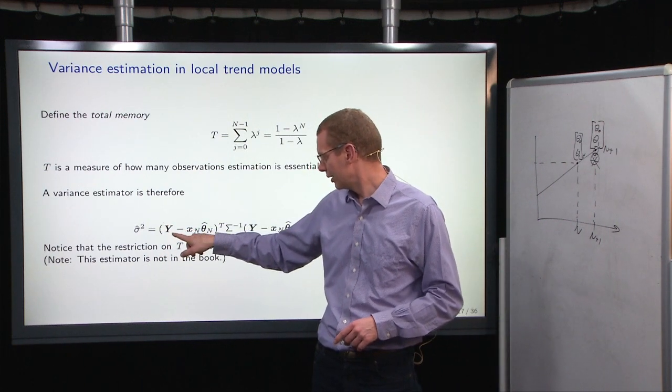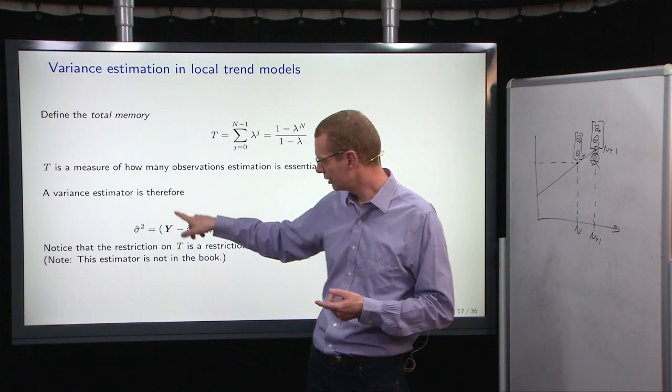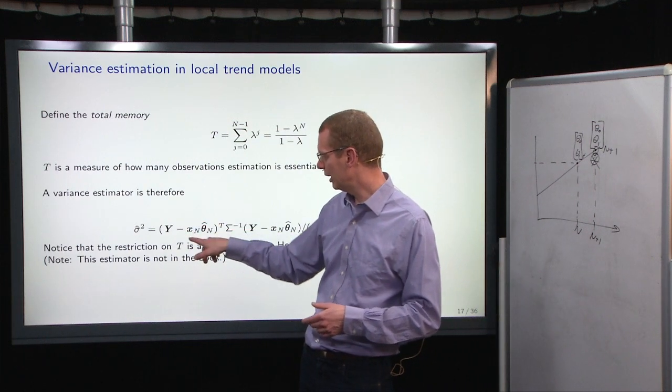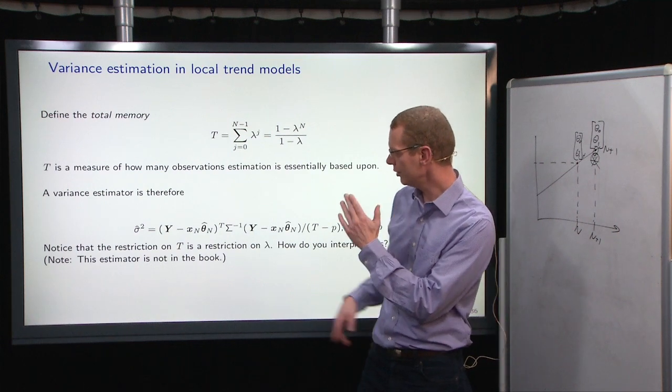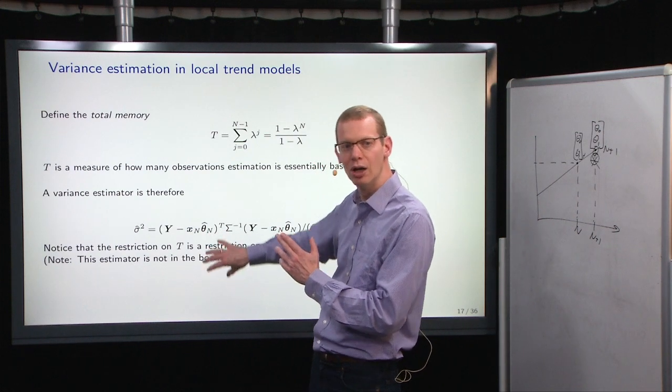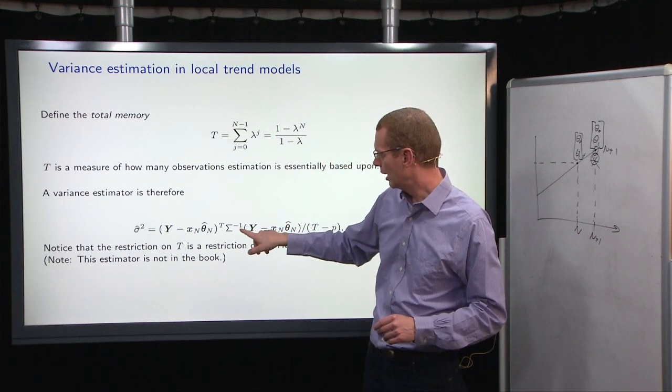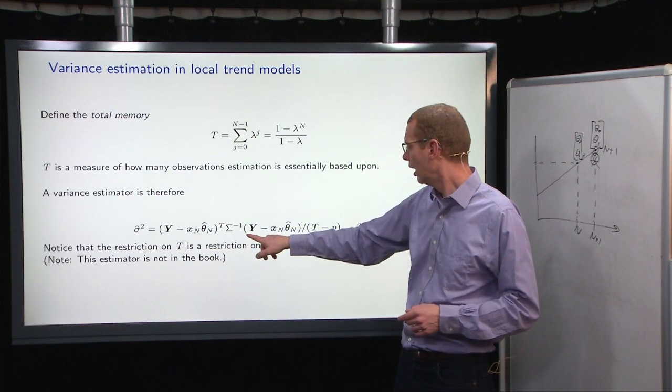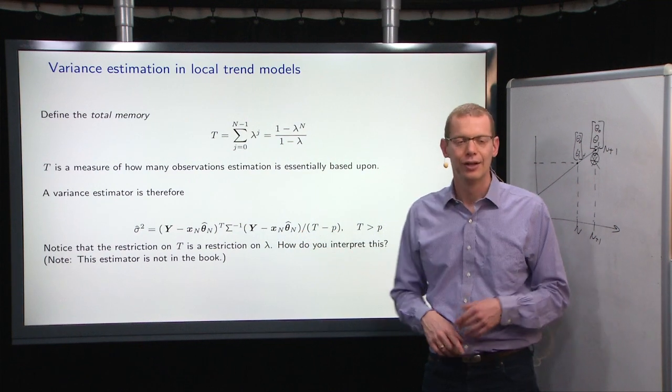So one, given a model, estimate here theta n at time n. We can take the vector of all the y's, just like in the global trend model, and we have a matrix Xn here that, for the local linear model, is a column of ones, and then it's a column of the time difference between starting with a zero at the last row and going backward up to minus n-1. And then we have the weights with the one over lambda to the correct power in the diagonal, and we have the same term as before, the prediction errors.